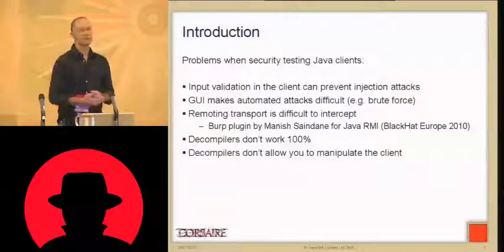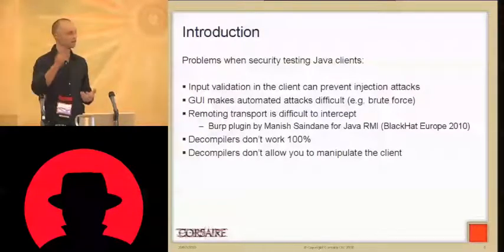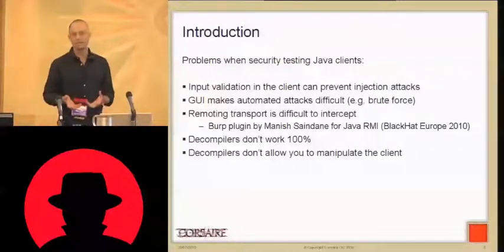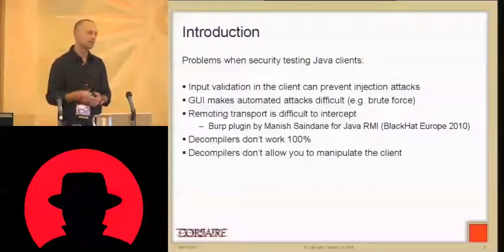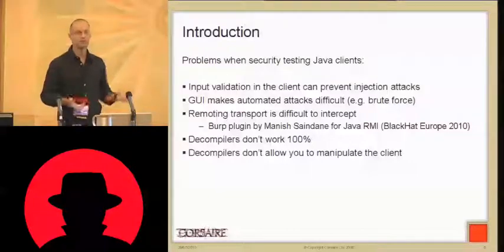Some of the problems when attacking a Java client: input validation is easy to circumvent on a web app by directly manipulating parameters, but on a Java client you don't have access to those fields or methods. The GUI gets in the way of automated attacks, making things like brute force or enumeration difficult. The remoting transport itself is difficult to intercept. Manish Sandane released a tool at Black Hat Europe to intercept serialized objects over RMI, but if the application uses Spring remoting or a different technology, you can't intercept it.